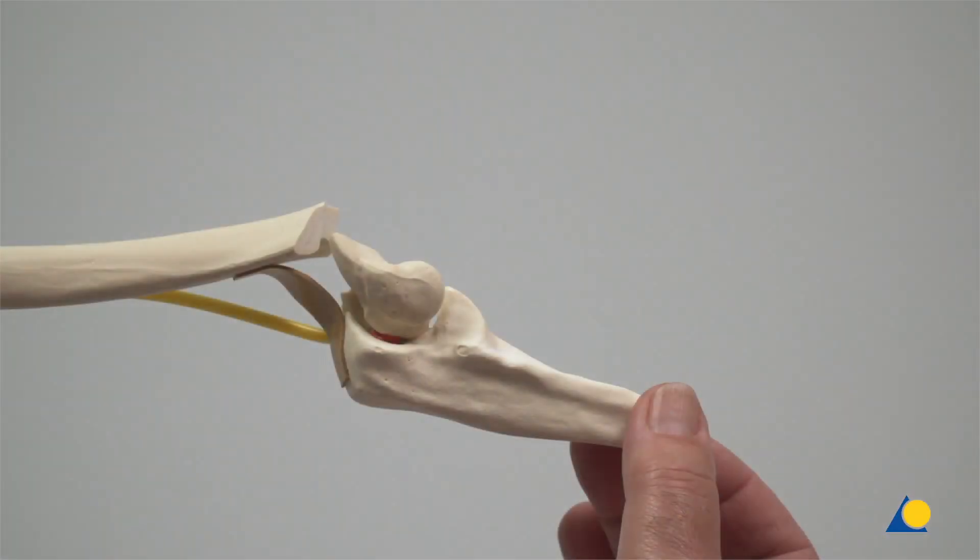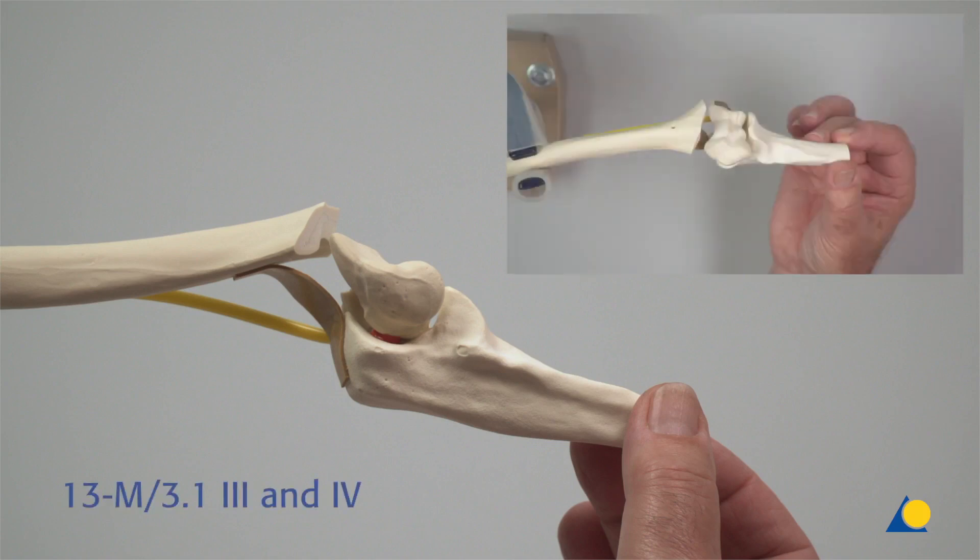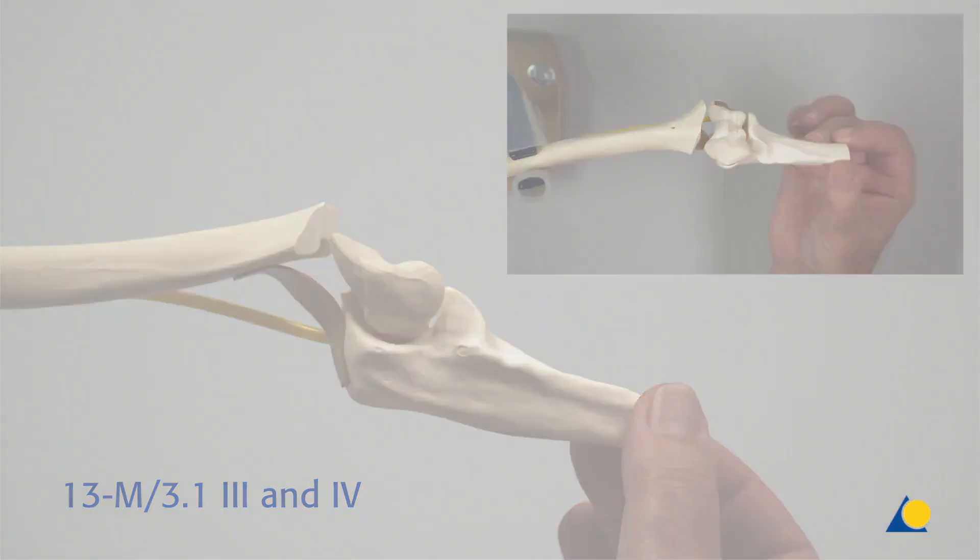The bone model shows a simple oblique extraarticular fracture, AO OTA Classification 1-3-M-3-1-4. It can be observed that the main fragment is connected to the ulna by the periosteum, the ulna nerve is visible on the medial side, and it is an extension-type fracture. Note that the bone model used in this demonstration does not include the radius.